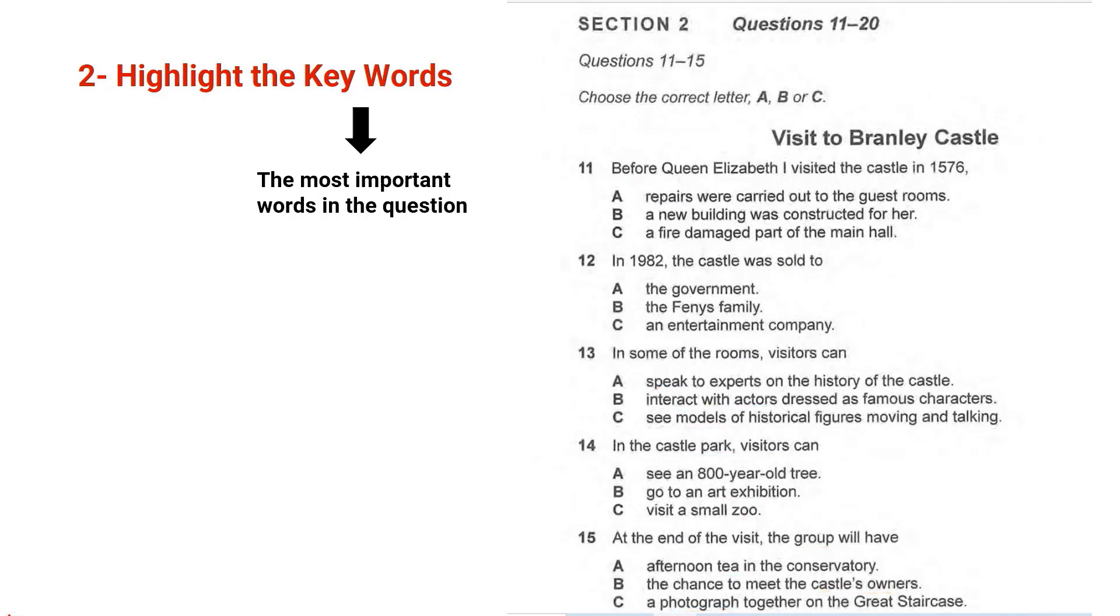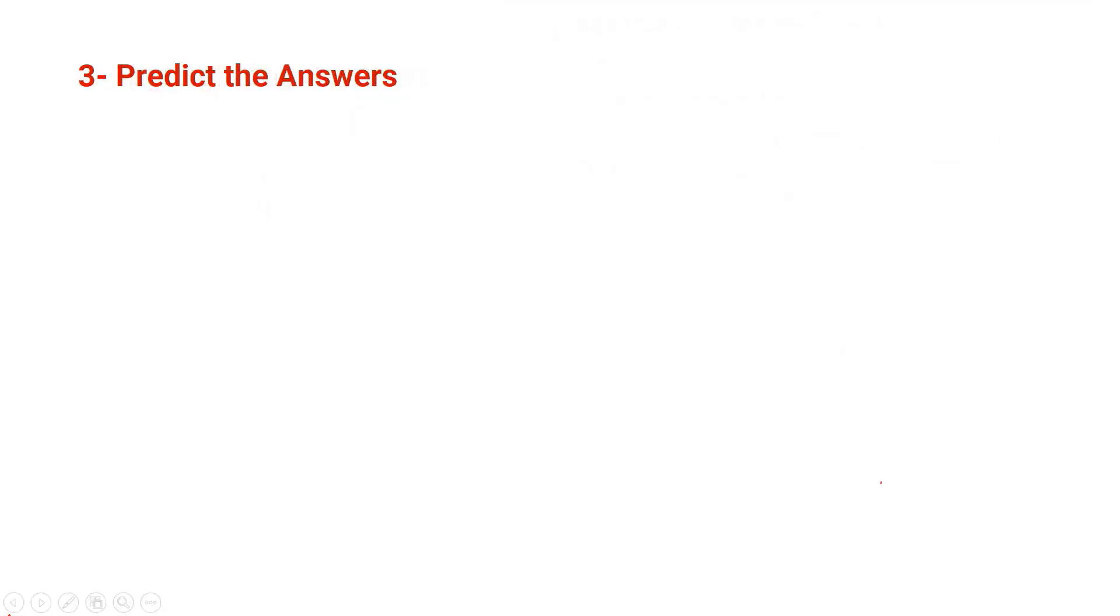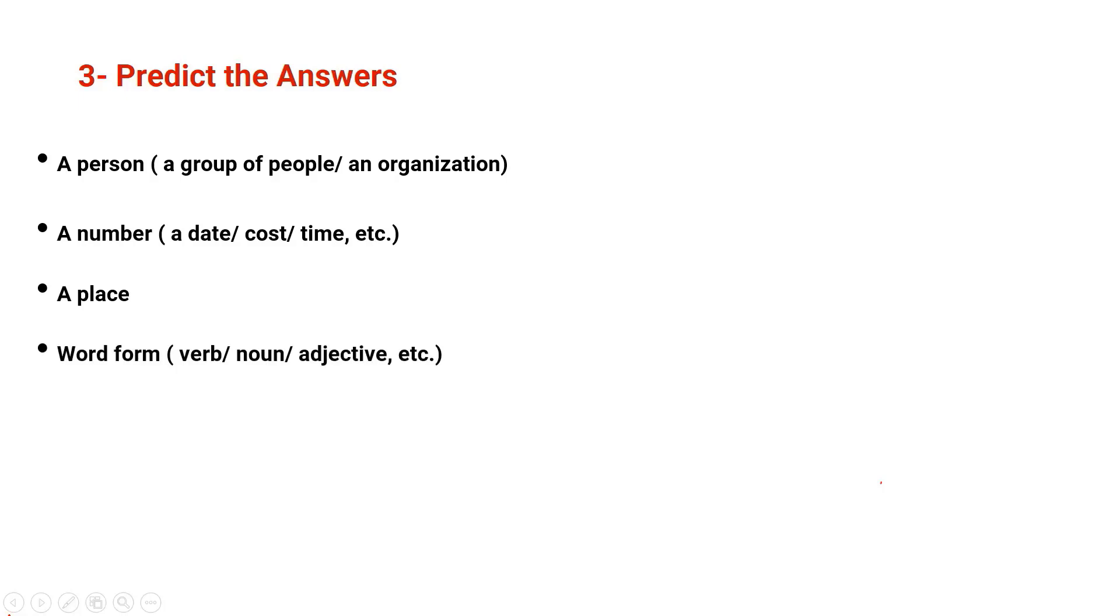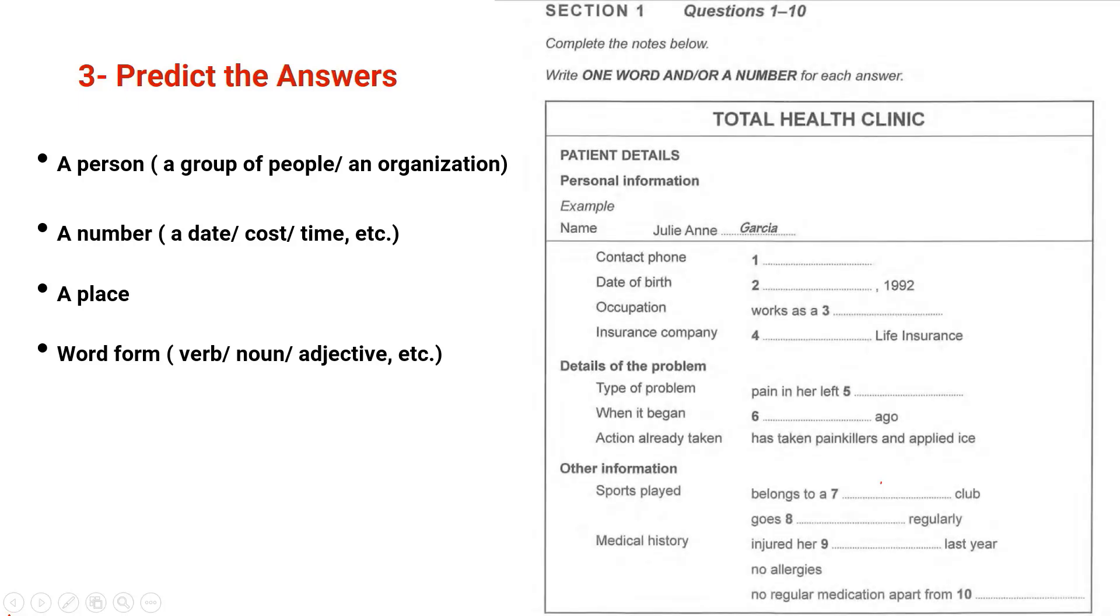And now let's move to the third strategy: predict the answers. To predict the answers means to expect the answers, and this strategy is very important because it helps you find the answer very quickly and save time. You can predict a person like a group of people or an organization. You can also predict a number like a date or a cost, especially if you find the currency symbol, so you know that it's a cost and you are going to hear a number. You can also predict time and so on. You can predict the place or you can predict the word form, grammar here: a verb or a noun or an adjective.